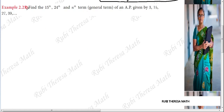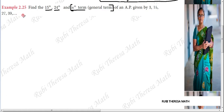Example 2.25: Find the 15th, 24th and nth general term of an AP given by 3, 15, 27, 39. The AP sequence given here is 3, 15, 27, 39.